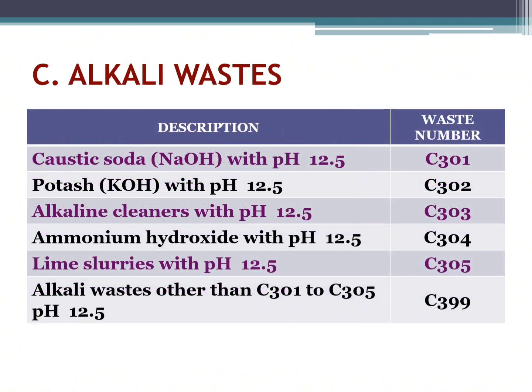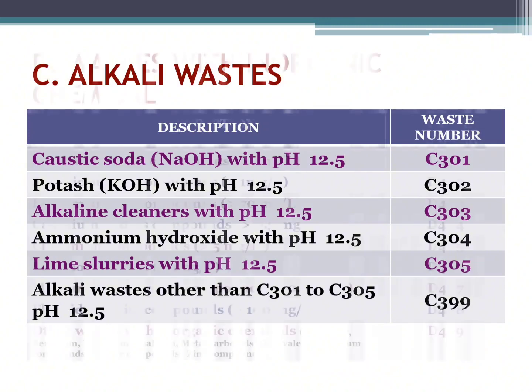The next is alkali waste. Caustic soda, NaOH, with pH 12.5, waste number C301. Potash, KOH, with pH 12.5, waste number C302. Alkaline cleaners with pH 12.5, waste number C303. Ammonium hydroxide with pH 12.5, waste number C304. Lime slurry with pH 12.5, waste number C305. Alkaline waste other than C301 to C305 with pH 12.5, waste number C399.